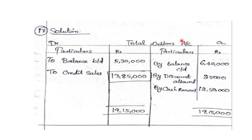Total debtors account — debit side and credit side. On the debit side, opening balance (balance brought down) is 5,30,000. We also place credit sales here, which is what we need to find. On the credit side, closing balance carried down is 6,40,000.